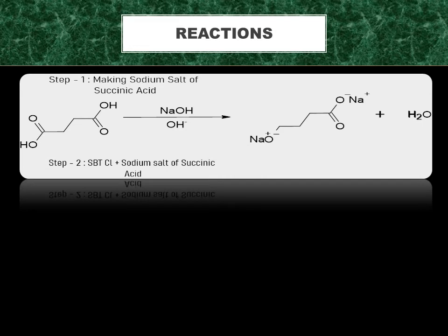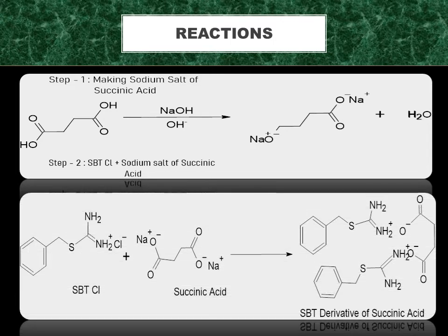These are the reactions involved in this experiment. The first step is to make the sodium salt of succinic acid — succinic acid is reacted with NaOH solution to give sodium succinate. The second step is to react the SBT chloride with the sodium salt of succinic acid.